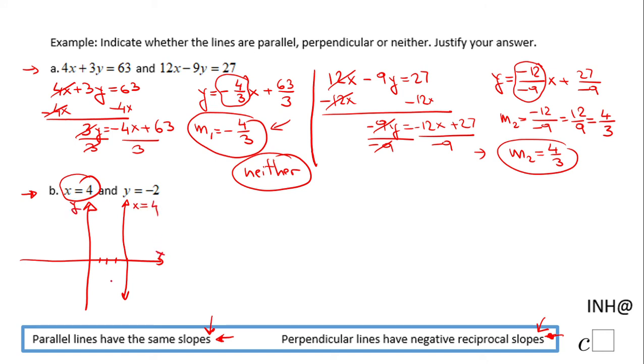And y equals negative 2 is a horizontal line that passes at y equals negative 2.